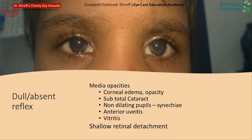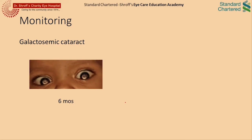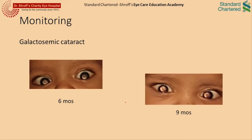A dull or absent reflex signifies that either the light is unable to reach the patient's retina or unable to come out of the patient's eye. This can happen with media opacities like cataract, corneal scars, vitritis, or vitreous opacities. It can also happen with non-dilating pupils due to posterior synechiae or shallow retinal detachments. The dull reflex due to a partial cataract can be used to monitor progression, especially in young children, as in this child with galactosaemic cataract. The child was advised a galactose-free diet and one can see the reduction of lenticular opacity over time, avoiding examination under anesthesia while maintaining a smartphone image record.